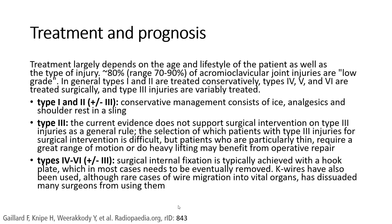Type 1 and Type 2 plus minor Type 3 conservative treatment may consist of ice, analgesia, and shoulder support in a sling. The current evidence does not support surgical intervention for Type 3 injury as a general rule. Selecting Type 3 patients for surgical intervention is difficult, but patients who particularly require a full range of movement or do heavy lifting may benefit from operative repair.